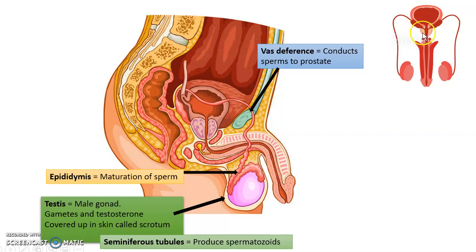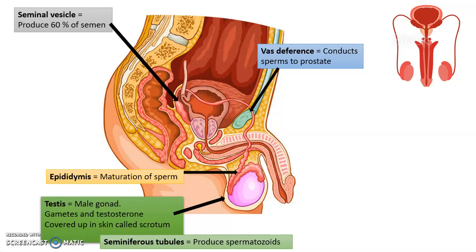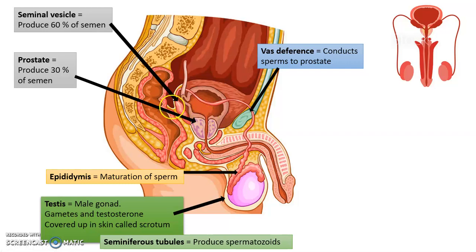The next organ is the seminal vesicle, a gland that produces 60% of the semen. Semen is the liquid in which sperm float — they need a medium of transportation and that liquid is called semen. Then we have another gland known as the prostate gland, which forms 30% of the semen. The prostate is also the place where some males can develop prostate cancer.